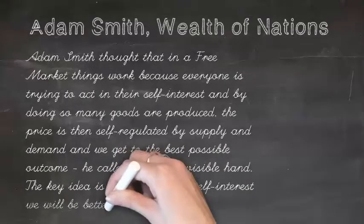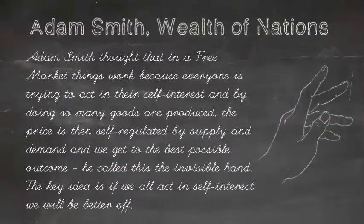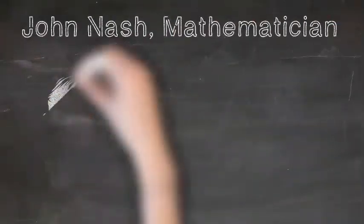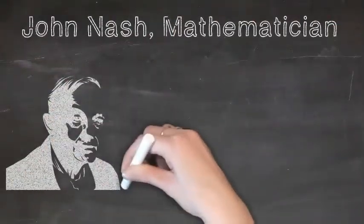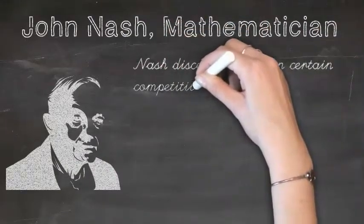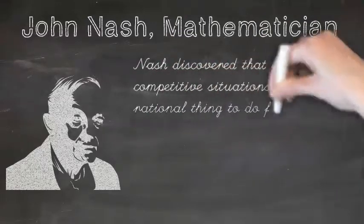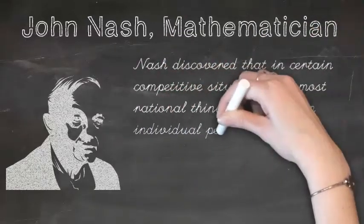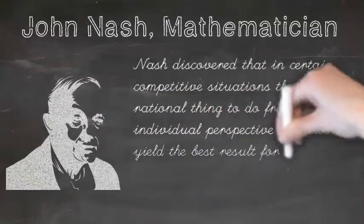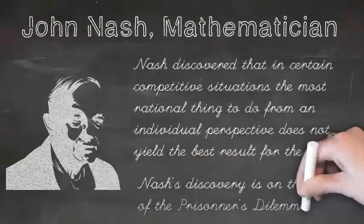The key idea is that if we all act in self-interest, we will be better off. Mathematician John Nash, featured in the film A Beautiful Mind, challenged this idea. He discovered that in certain competitive situations, the most rational thing to do from an individual perspective does not yield the best result for the group. Nash's discovery is the basis of the prisoner's dilemma.